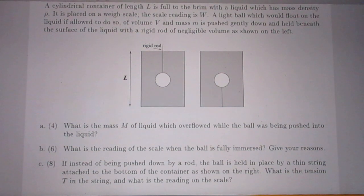A light ball which would float on the liquid if allowed to do so, of volume V and mass m (m as in Mary), is pushed gently down and held beneath the surface of the liquid with a rigid rod of negligible volume as shown on the left.